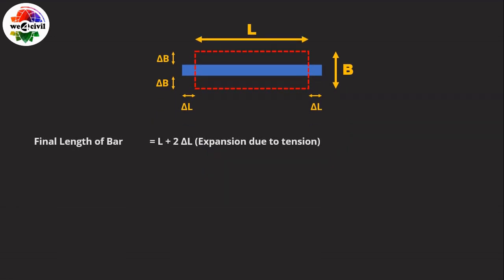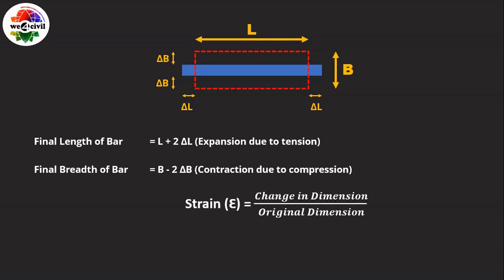We can see that the final length of the bar becomes L plus 2 delta L, and the final breadth of the bar becomes B minus 2 delta B, where delta L is the elongation in the longitudinal direction and delta B is the contraction in the lateral direction. As we know, strain is defined as the change in dimension divided by the original dimension.